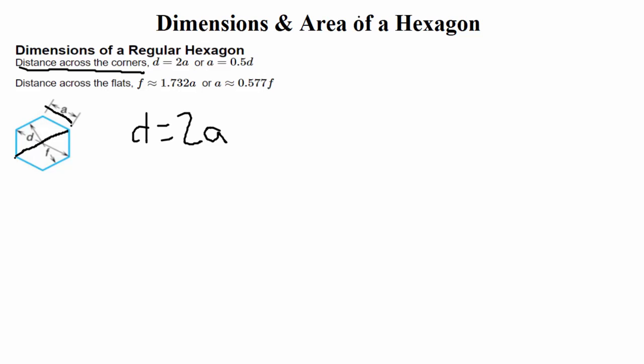There's also distance across the flats, and that's from the flat side of the hexagon across to the other flat side of the hexagon. So it's a slightly different calculation. If you're going for the distance across the flats, then we have the following formula for that. F is approximately equal to 1.732A. So again, just take A, the side of the hexagon, and multiply it by that decimal. As long as you know what A is, you can calculate the distance across the corners or the distance across the flats.